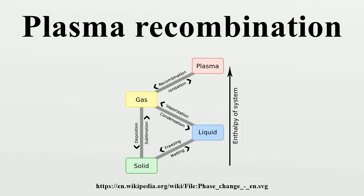Plasma recombination is a process by which positive ions of a plasma capture a free electron and combine with electrons or negative ions to form new neutral atoms. Recombination is an exothermic reaction, meaning heat-releasing.